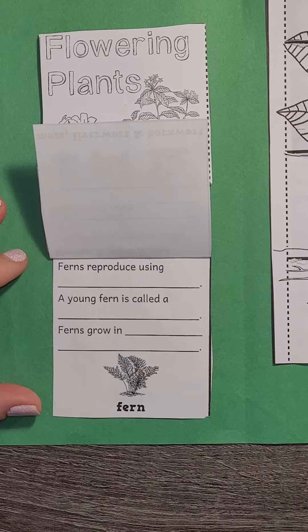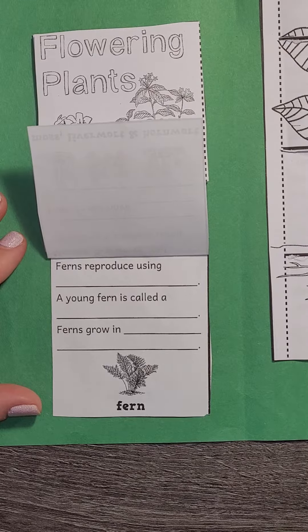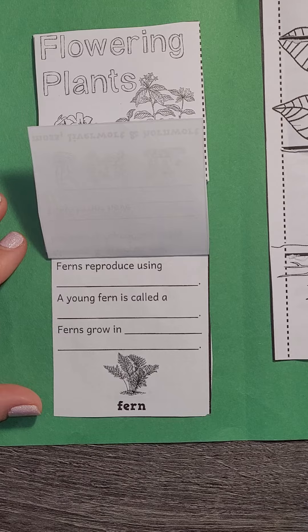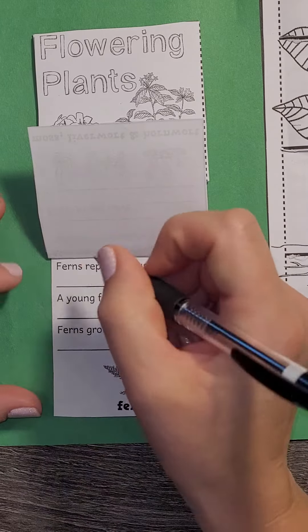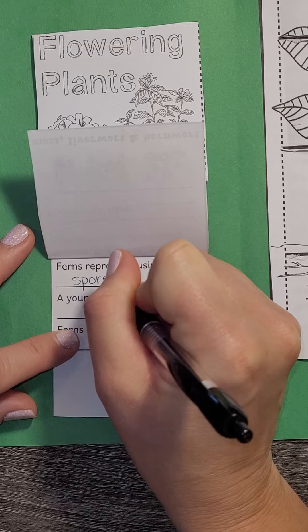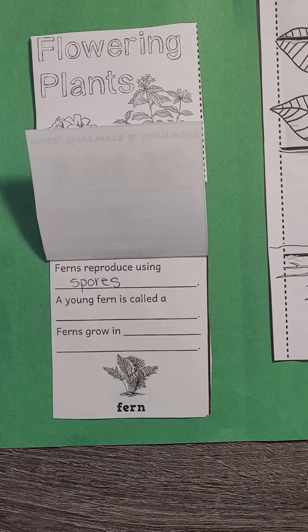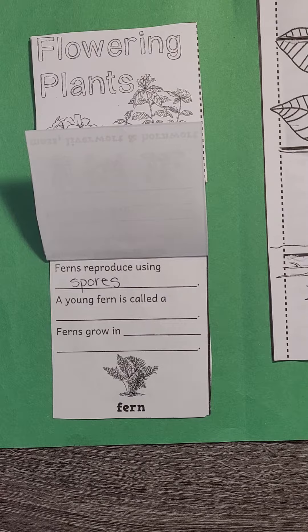If you remember when we talked about spores earlier, when we talked about structures — ferns reproduce using spores. Remember, spores grow on the underside of the leaf and they release into the air, which then germinates to grow a new fern.